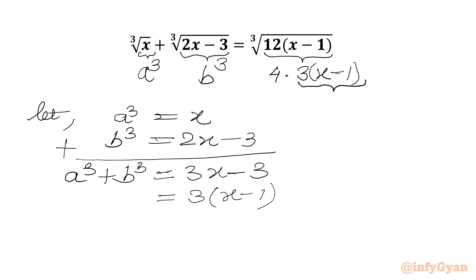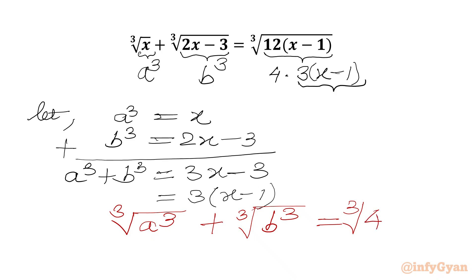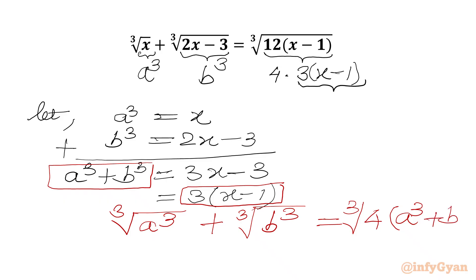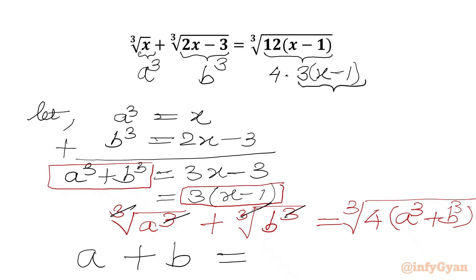On LHS it is cube root of a cube. So our equation becomes: cube root of a cube plus cube root of b cube equal to cube root of 4 times 3x minus 1. Here we can write a cube plus b cube, so I will write 4 times a cube plus b cube. Now cube root and cube cancel from the left hand side, so we can write a plus b equal to cube root of 4 times a cube plus b cube.